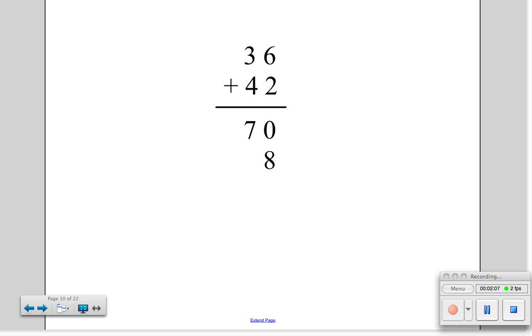Now we get to add the second column. 6 plus 2 equals 8. Finally, we get to add 70 plus 8, our partial sums, to find our final sum. 70 plus 8 equals 78.